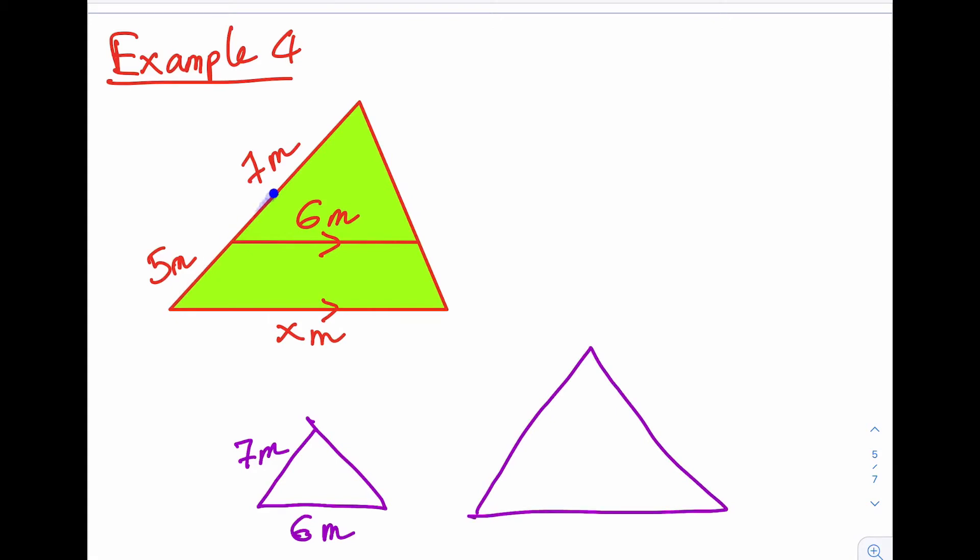Now we're just looking at the big side. So it's all the way along. So it's 7 and 5 is 12 meters. And our bottom side is X. And we can then start the question.